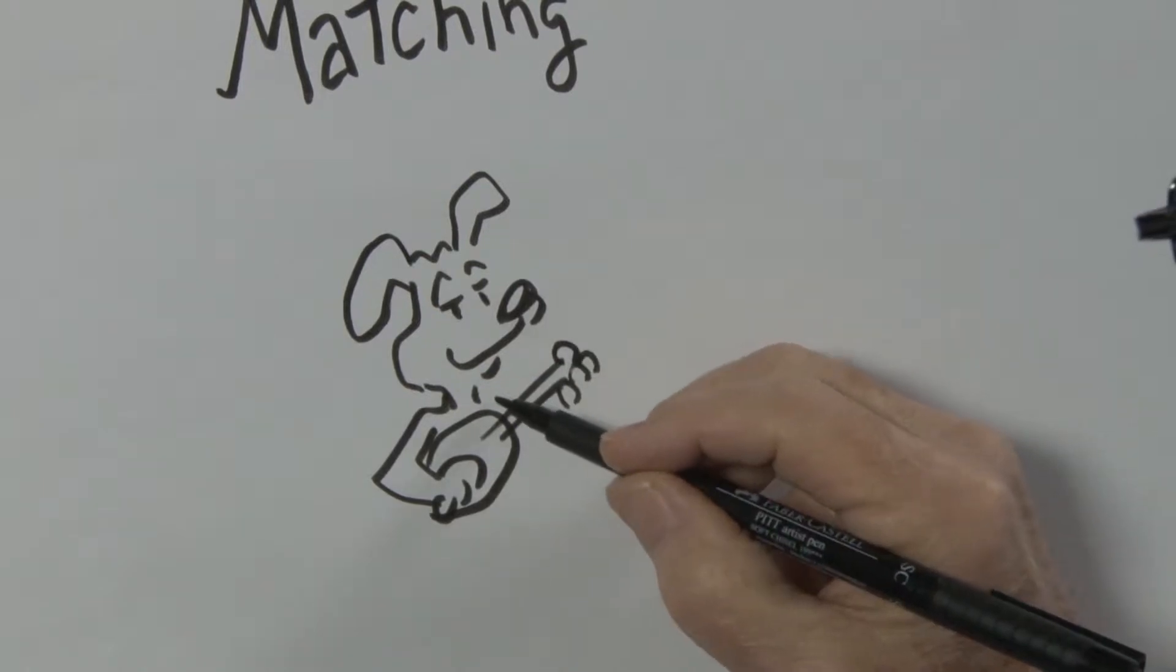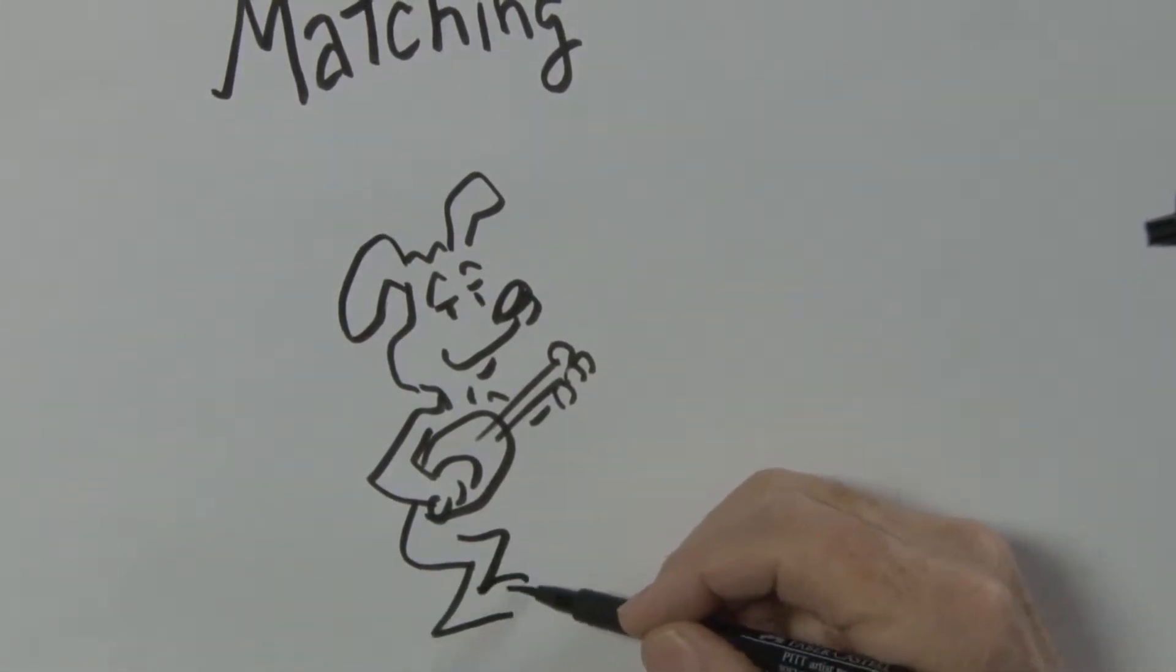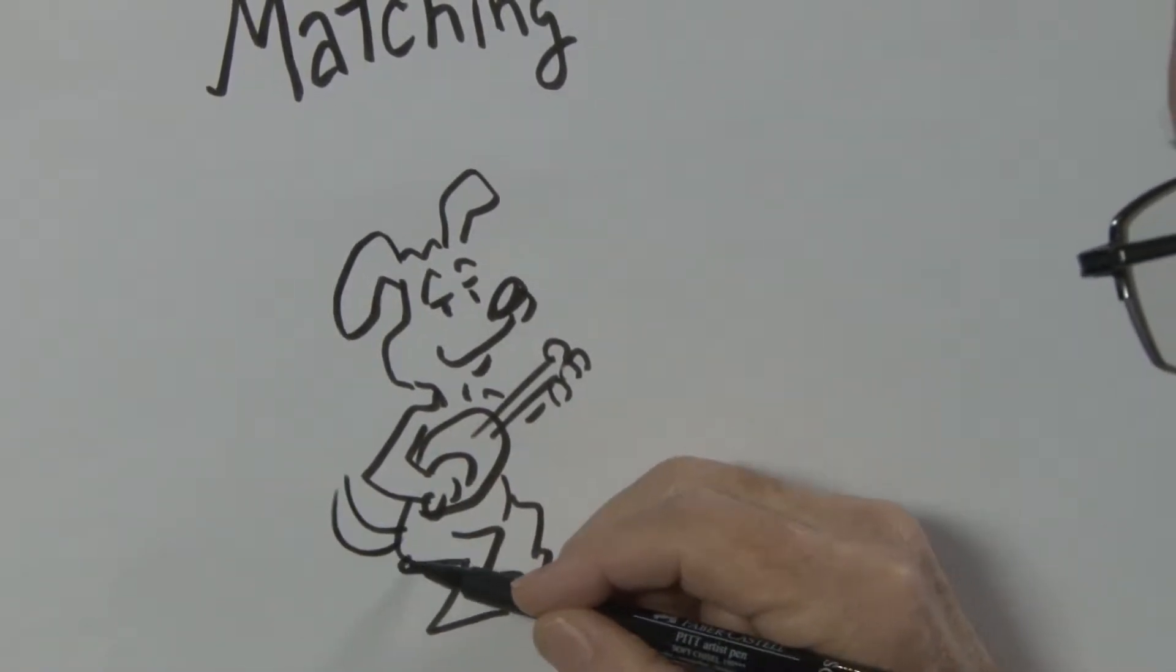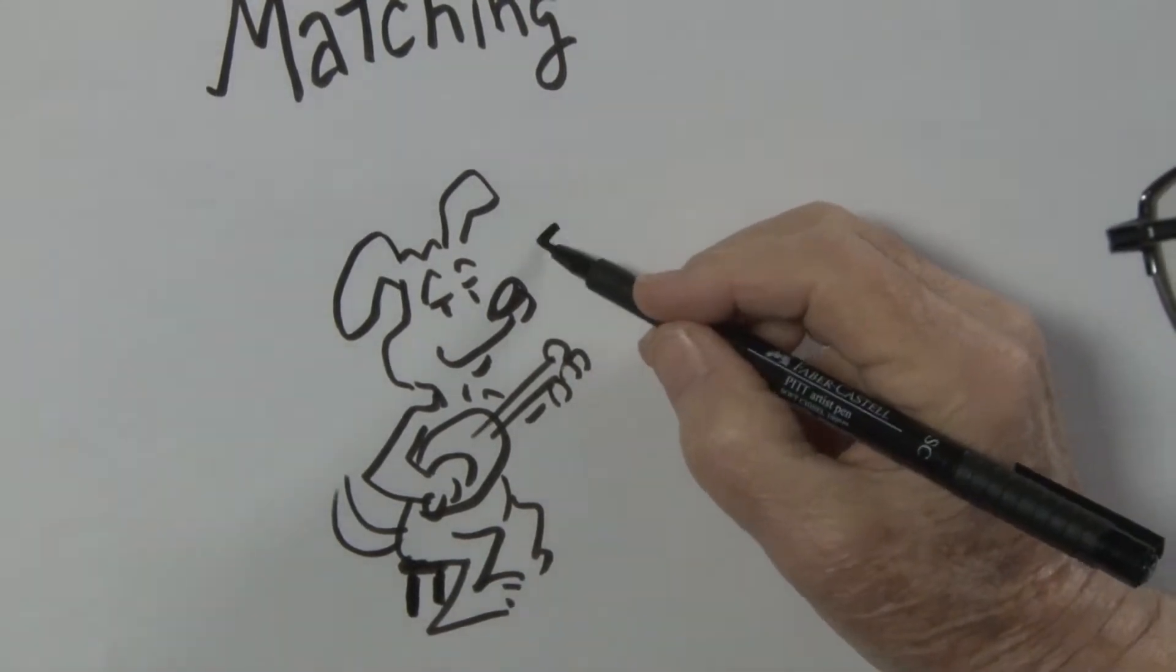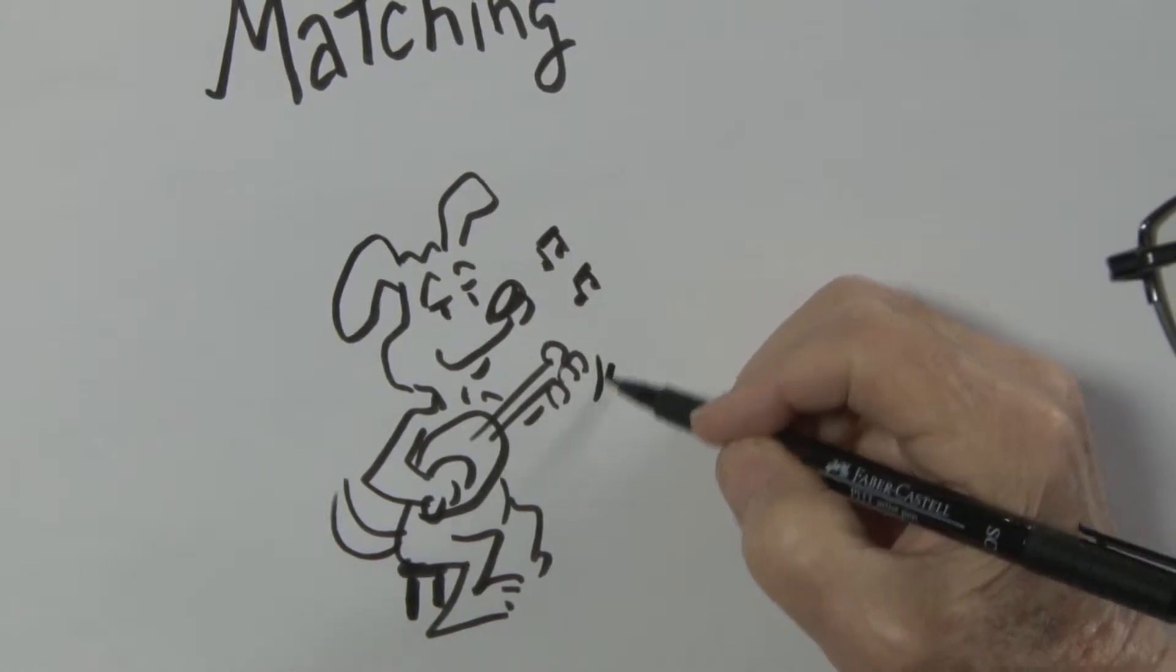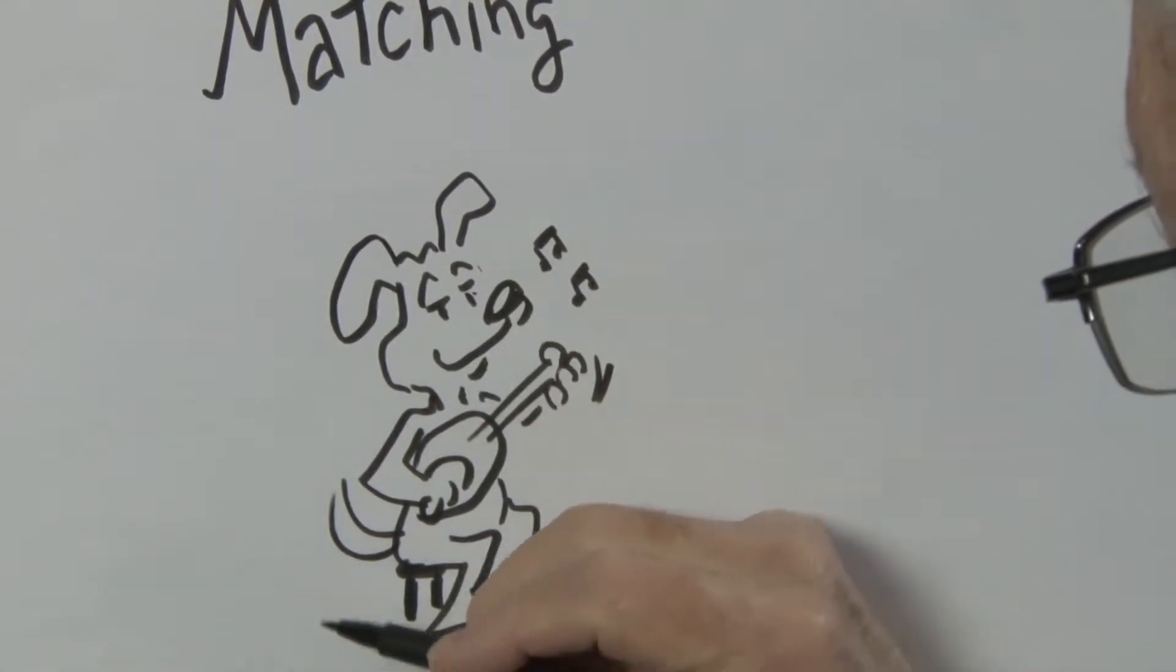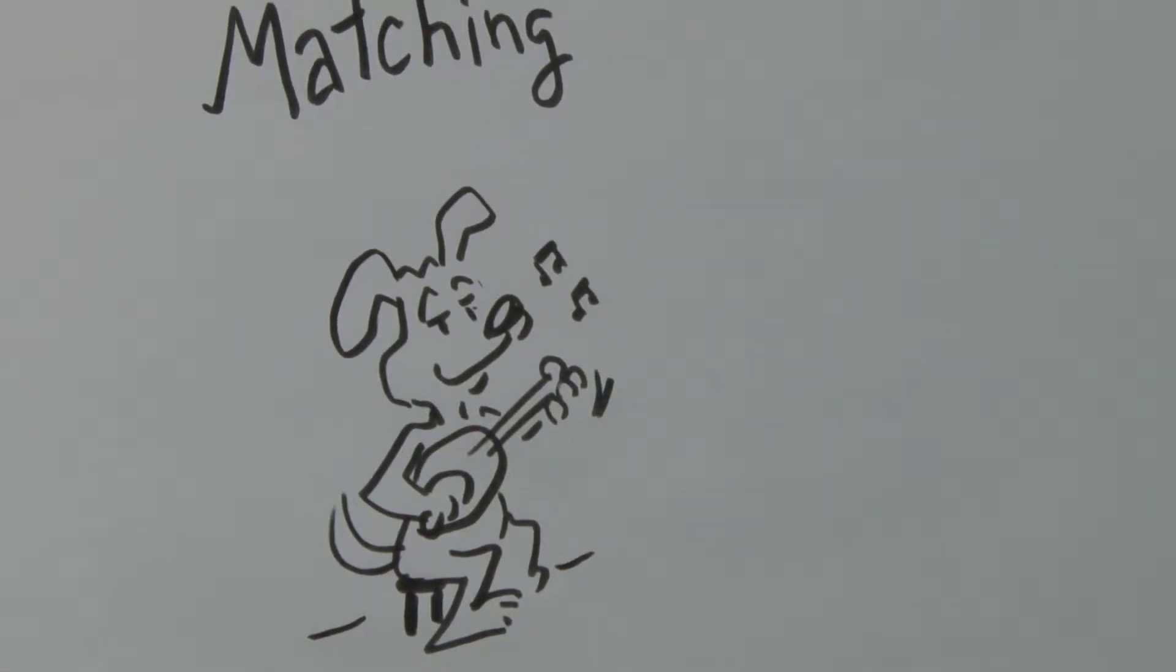Sitting on a little stool like that. And in cartoons, when you have something musical going on you have these little musical notes. So there's our dog musician.